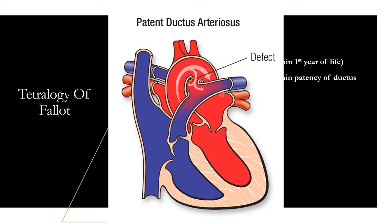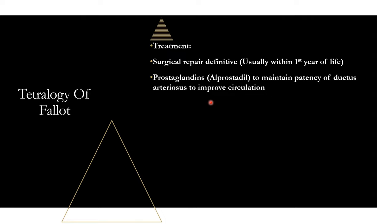In the fetal stages, the ductus arteriosus connects the pulmonary artery to the aorta, allowing blood to bypass the lungs and go straight out into the body, since the fetus gets oxygen from the mother's placenta and the lungs have high pressure. Once born, the lungs open and pressure shifts, allowing the PDA to serve as a secondary source for blood to reach the lungs. So keeping the PDA open with prostaglandins provides extra circulation for these patients until surgical correction.